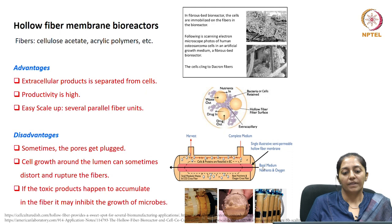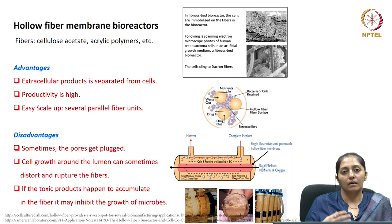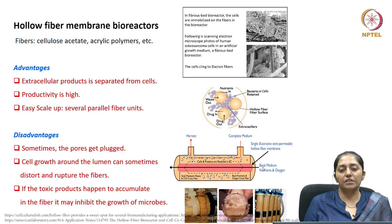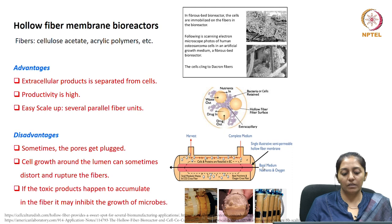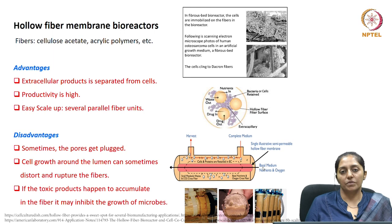Hollow fiber membrane bioreactors are used in industry for animal cell fermentations. The extracellular product can be easily separated from cells, productivity is very high, and they are easy to scale up because many parallel fiber units are inserted in one column. Disadvantages include pore blocking due to excessive cell growth around the fibers, distortion or rupture of fibers by growth around the lumen, accumulation of toxic byproducts in the fiber inhibiting microbial growth, and mass transfer limitations as cultivation time proceeds.